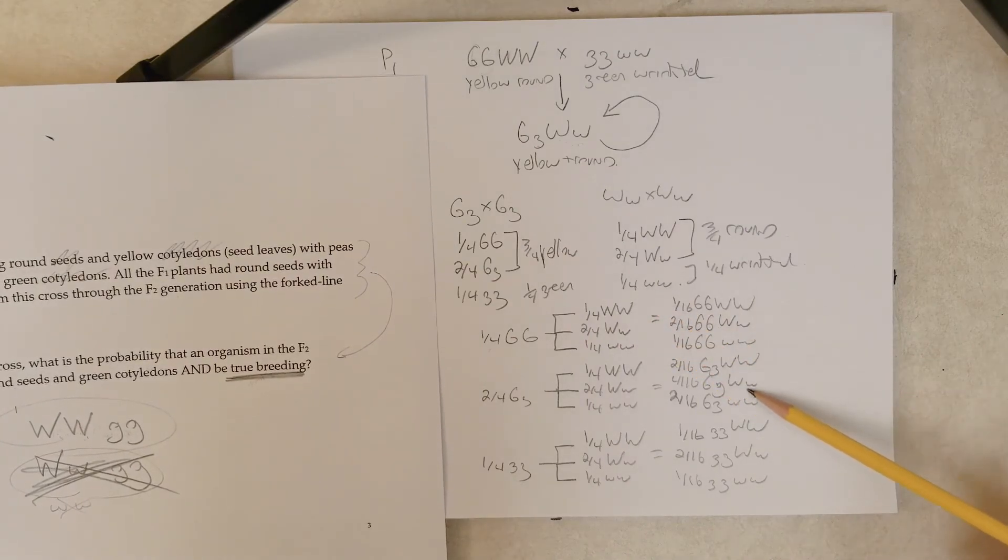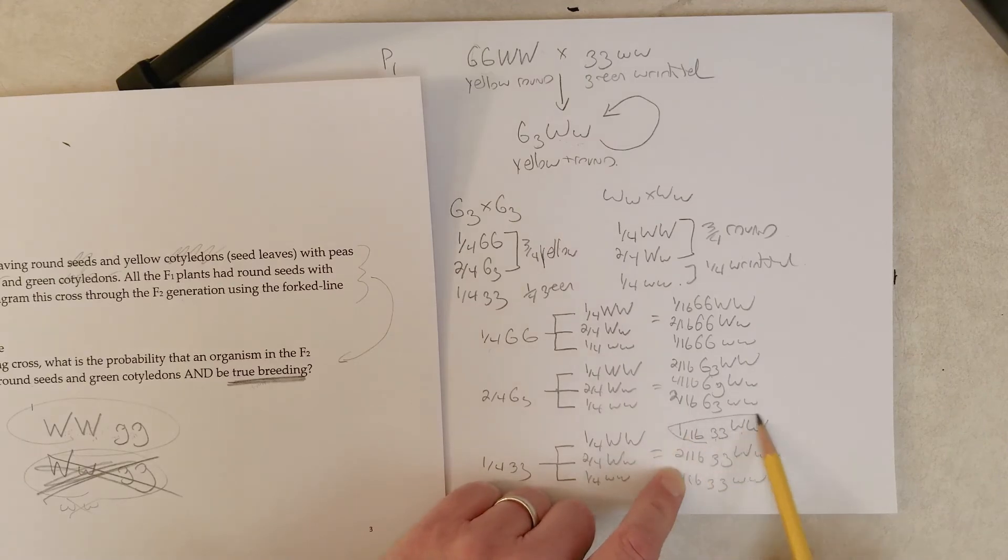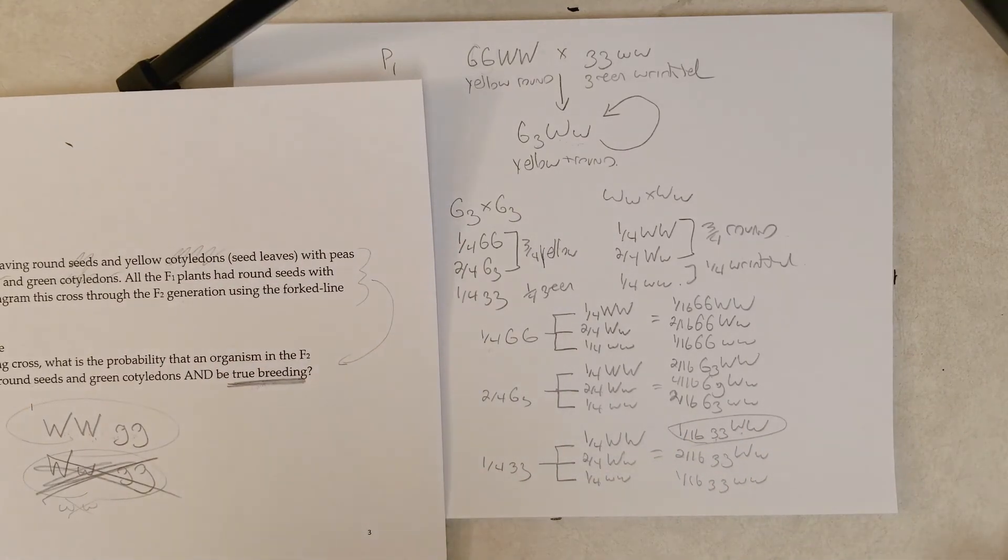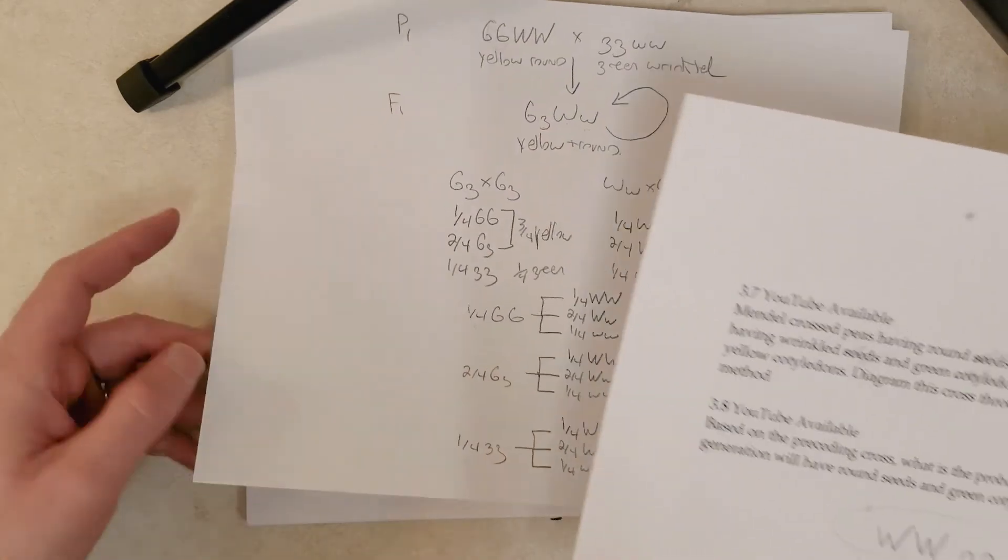So, we see right here, two big W's, two little g's. So, this is the answer. Now, we can also get that answer another way, right?